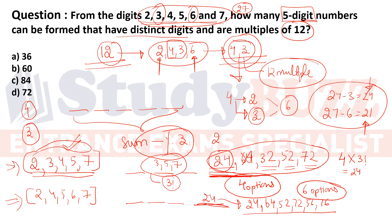For Group 2 ({2,3,4,5,7}): the valid two-digit multiples of 4 from these digits are 24, 32, 52, 72, 52... specifically 24, 32, 52, 72 and others — giving 6 options. For each, the remaining 3 digits arrange in 3! = 6 ways, giving 6 × 6 = 36 numbers. Total = 24 + 36 = 60 five-digit numbers.